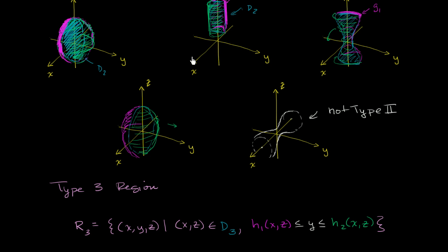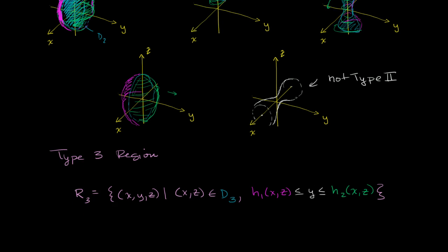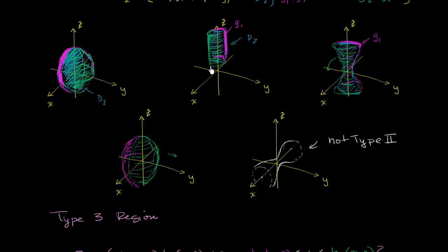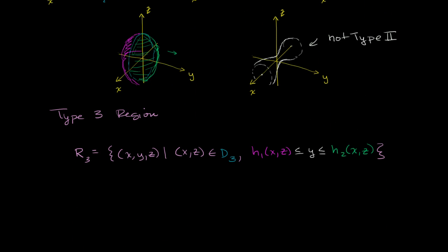We make the exact same argument with the cylinder. So first of all, the sphere is a type 1, type 2, and type 3 region — it meets all of the constraints. The cylinder, at least the way it was oriented, and actually any cylinder, will also be a type 3 region by the exact same argument.